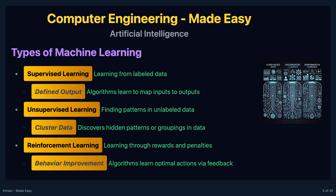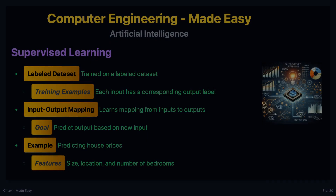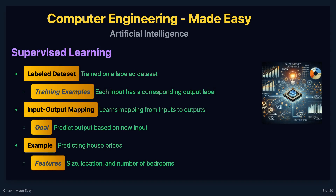There are three main types of machine learning: supervised learning, unsupervised learning, and reinforcement learning. In supervised learning, the algorithm is trained on a labeled dataset, which means that each training example is paired with an output label. The goal is to learn a mapping from inputs to outputs — for example, predicting house prices based on features like size, location, and number of bedrooms.